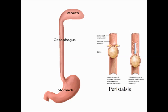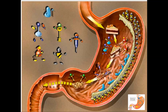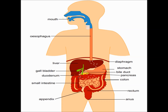Key points: The process of hydrolyzing complex food molecules into simple substances by enzymes is called digestion. The digestive system in humans consists of mouth, buccal cavity, pharynx, esophagus, stomach, duodenum, small intestine, large intestine, rectum and anus.